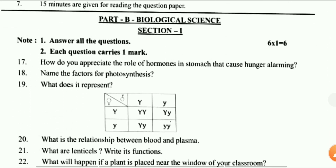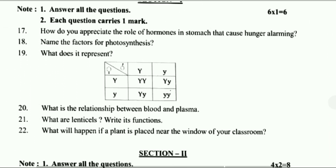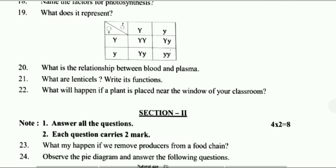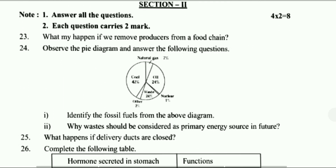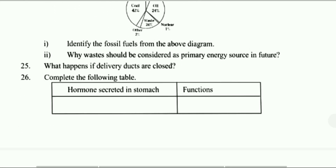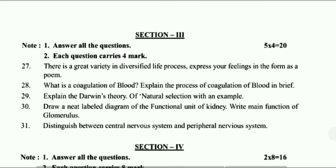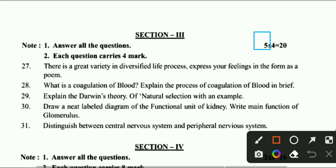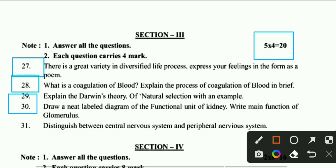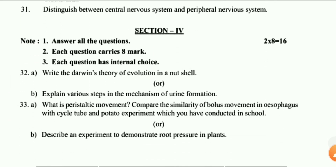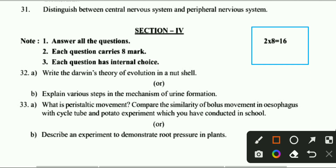Part B is Biological Science. This is also a very important question paper. You can see questions 25 and 26. Section 3 carries 20 marks — questions 27, 28, 30, and 31. Section 4 carries 6 marks each: questions 32a, 32b, 33a, and 33b.